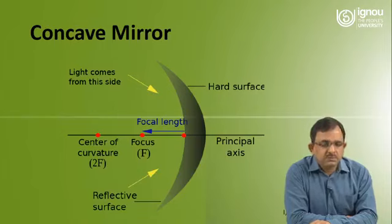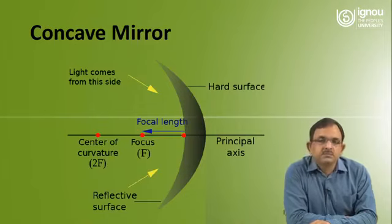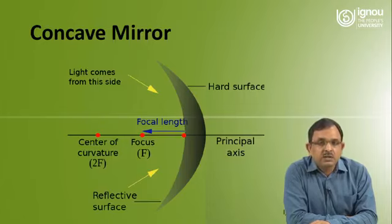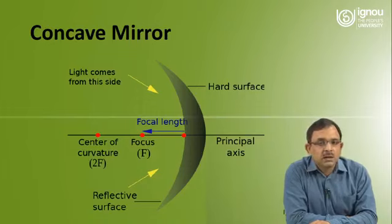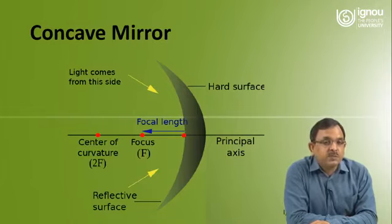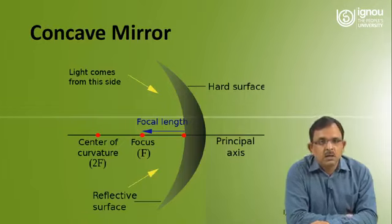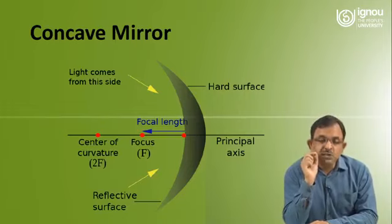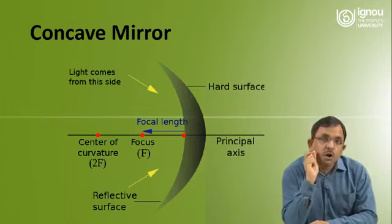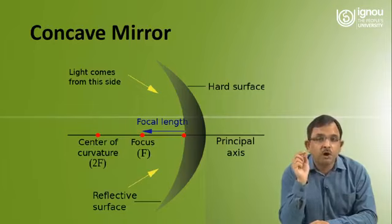There are basically two types of spherical mirrors: concave mirror and convex mirror. In a concave mirror, the hard outer surface is polished and the depth is at the inner surface from where the light is reflected. You can see from the diagram on which side the light is coming and from where the reflection will occur. Before explaining how an image is formed in a mirror, there are some terminologies you need to introduce to your learners.